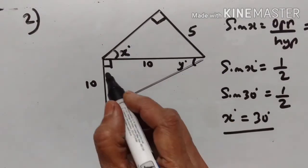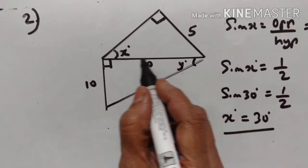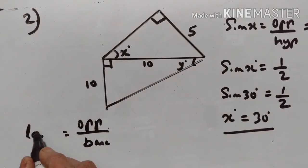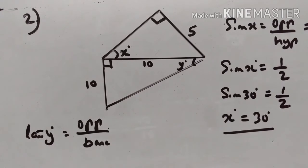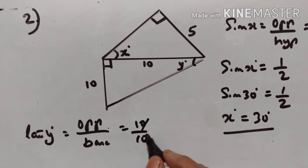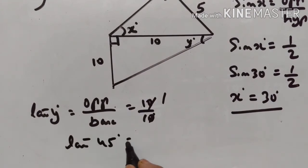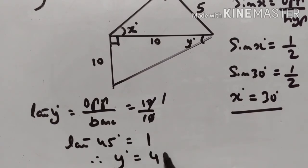For angle y, this is the opposite and this is the base. Opposite upon base is equal to tan y. This is equal to 10 upon 10, which is equal to 1. Tan of what is equal to 1? Tan of 45°. Tan 45° is equal to 1. Therefore y is equal to 45°.